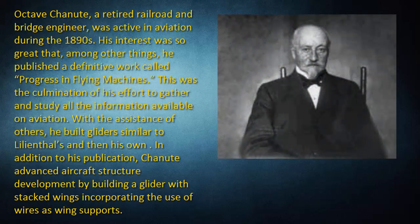Octave Chanute, a retired railroad and bridge engineer, was active in aviation during the 1890s. His interest was so great that, among other things, he published a definitive work called Progress in Flying Machines, the culmination of his effort to gather and study all the information available on aviation. With the assistance of others, he built gliders similar to Lilienthal's and then his own. Chanute advanced aircraft structure development by building a glider with stacked wings incorporating the use of wires as wing supports.